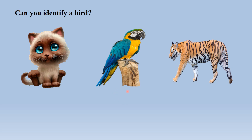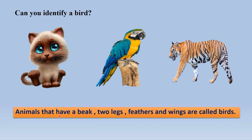How can we recognize a bird? Do you know, children? Animals that have a beak, two legs, feathers, and wings are called birds. Is it clear now? Animals that have a beak, two legs, feathers, and wings are called birds.